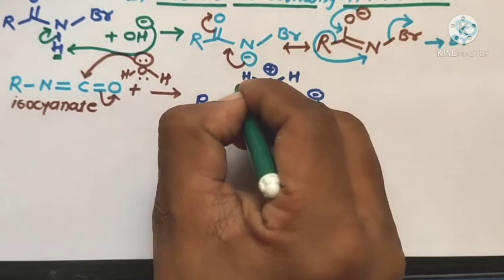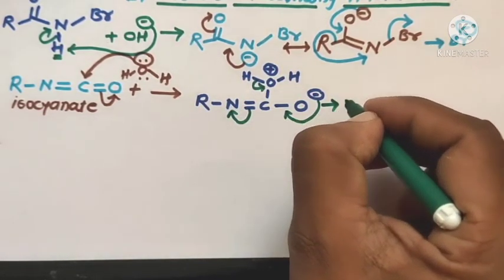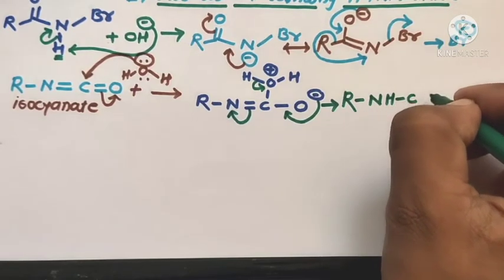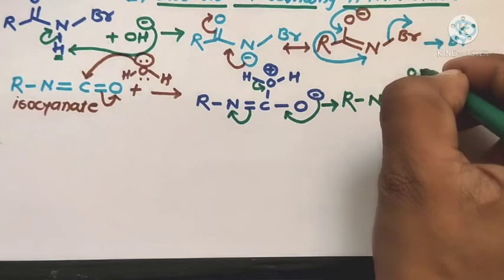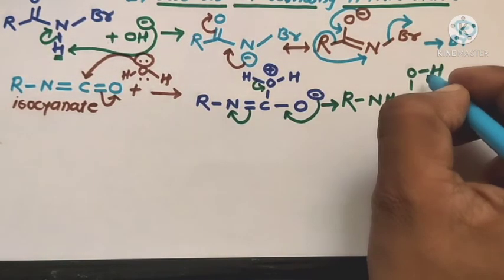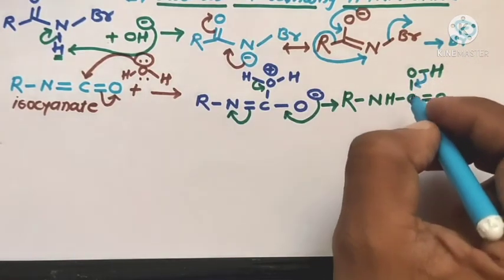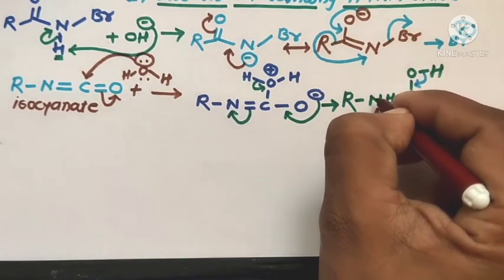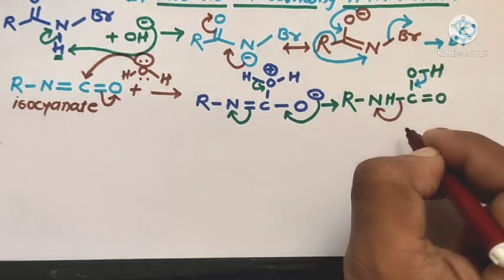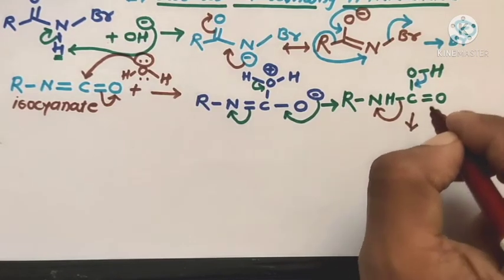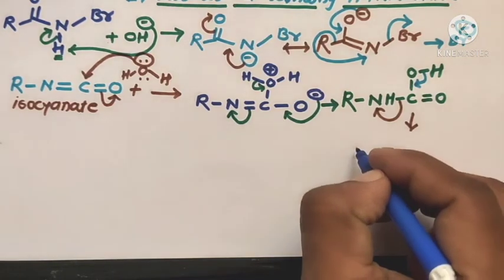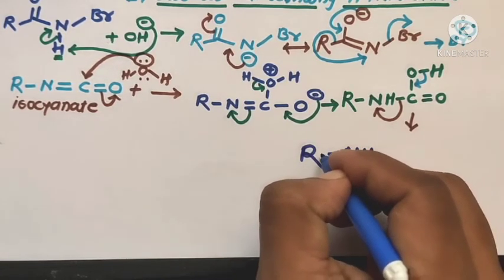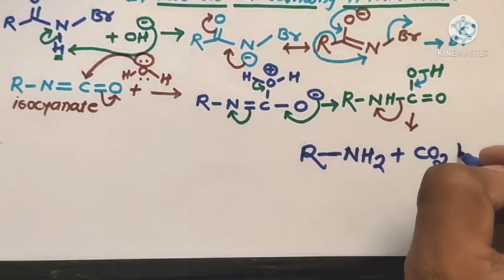The N⁻ ion abstracts H⁺ to form the molecule RNH-C(=O)-OH (carbamic acid). This molecule again rearranges: the bonding electrons shift to form a single to double bond, and these electrons shift toward the nitrogen atom, forming N⁻ ions. This N⁻ ion abstracts H⁺, and then with elimination of carbon dioxide (CO2), the final product is formed.